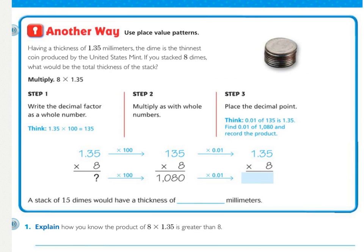Another way to multiply a decimal by a whole number is to use place value patterns. Place value patterns we practiced in lesson 1 of chapter 4. So, having a thickness of 1 and 35 hundredths millimeters, the dime is the thinnest coin produced by the United States Mint. If you stack 8 dimes, what would the total thickness be the total thickness of the stack? Well, we're wanting to know the total thickness of the stack of 8 dimes that have 1 and 35 hundredths millimeters. So, that's how we came up with 8 times 1 and 35.